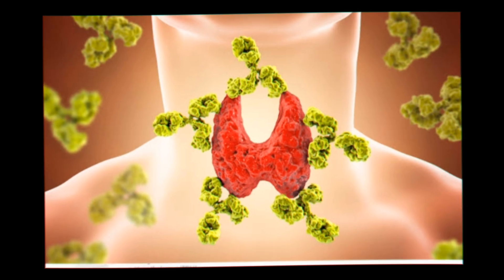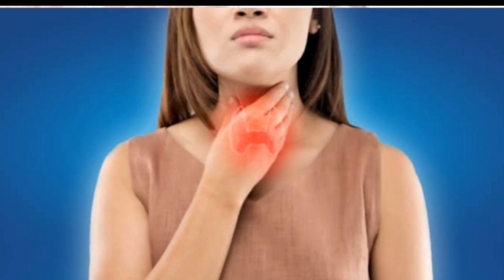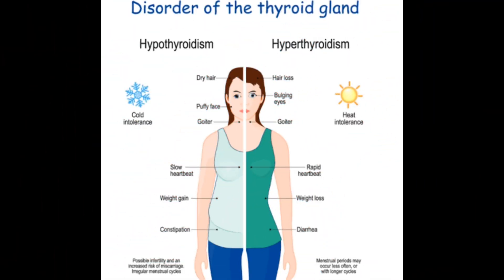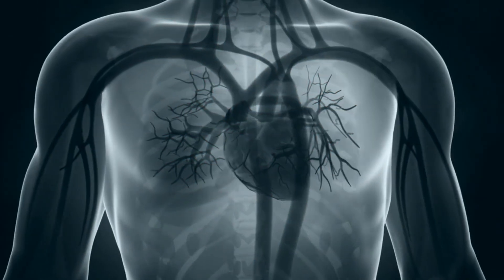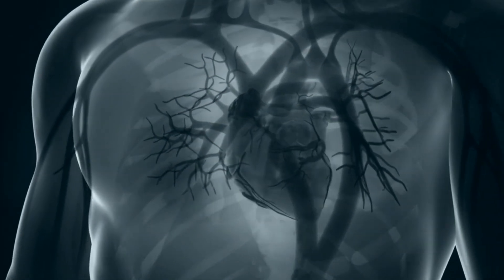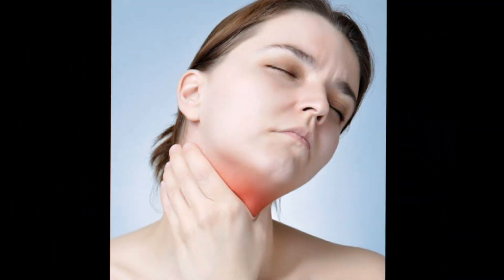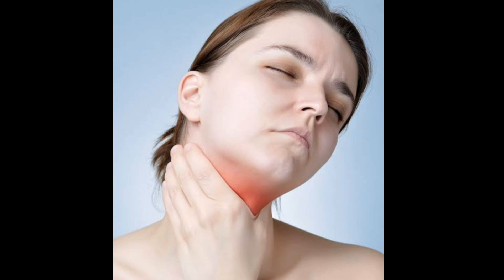Your thyroid typically makes hormones that keep your body functioning normally. When the thyroid makes too much thyroid hormone, your body uses energy too quickly — this is called hyperthyroidism. Using energy too quickly can make your heart beat faster, cause you to lose weight without trying, and even make you feel nervous.